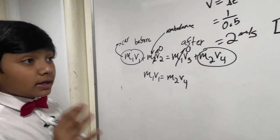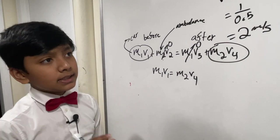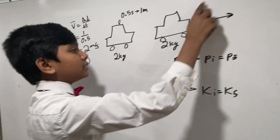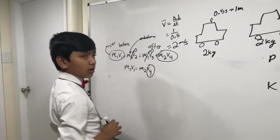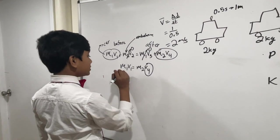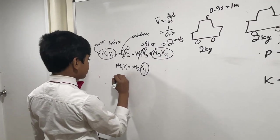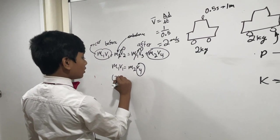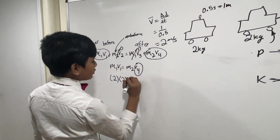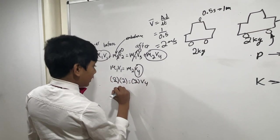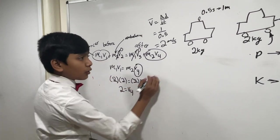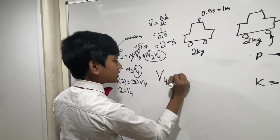And now, what our goal was, was to find the velocity of the sky after the collision. And that would be V4. So, what does that give us? Well, M1 is 2. V1 was 2 as well. M2 was 2. So, what should V4 give us? Well, I think it's pretty obvious. V4 is 2 meters per second.